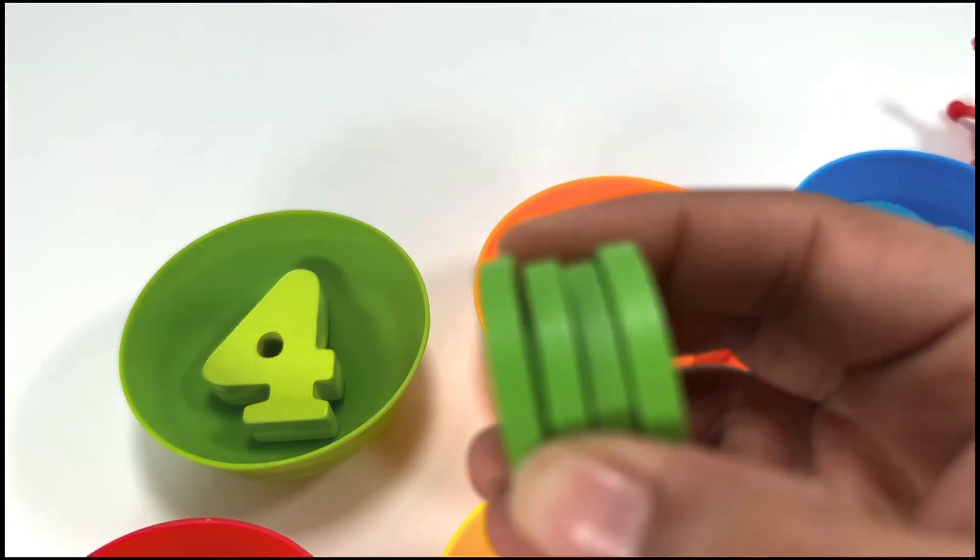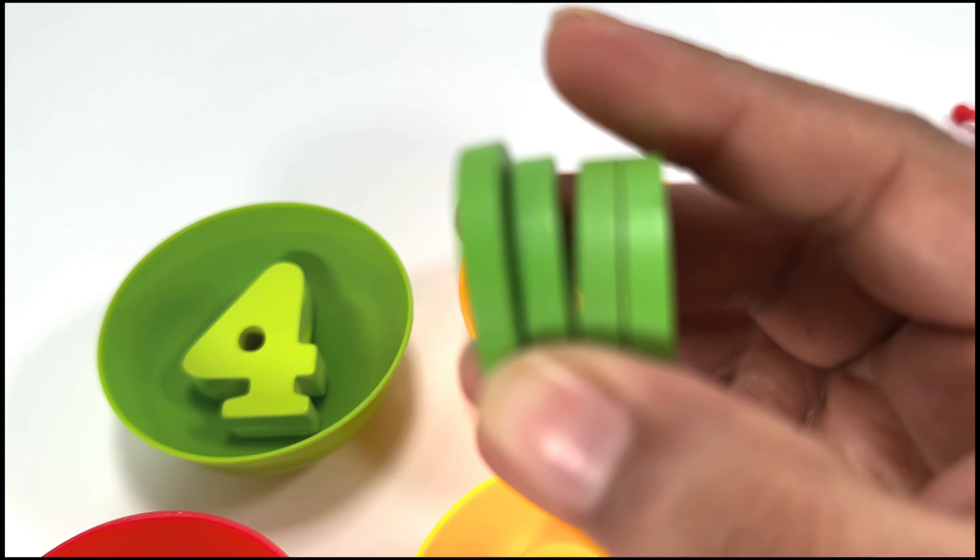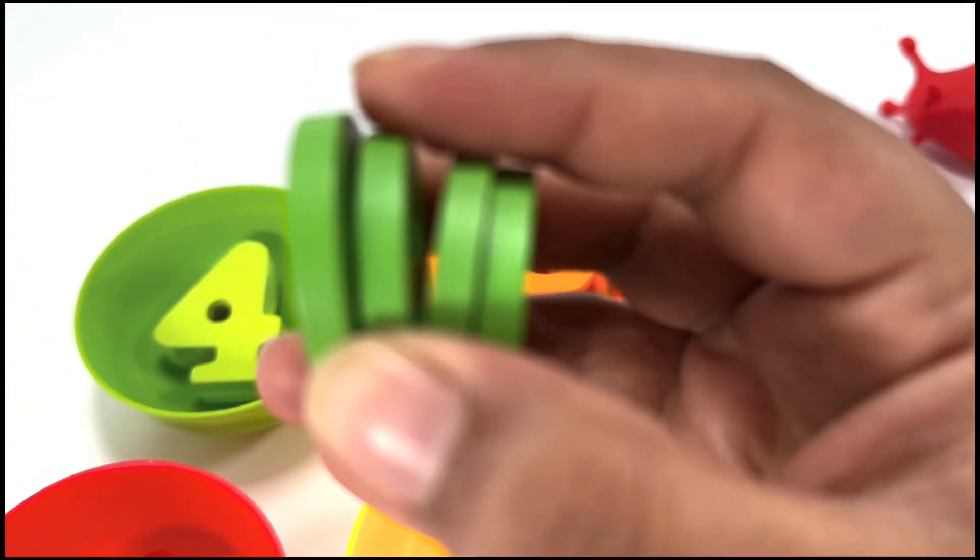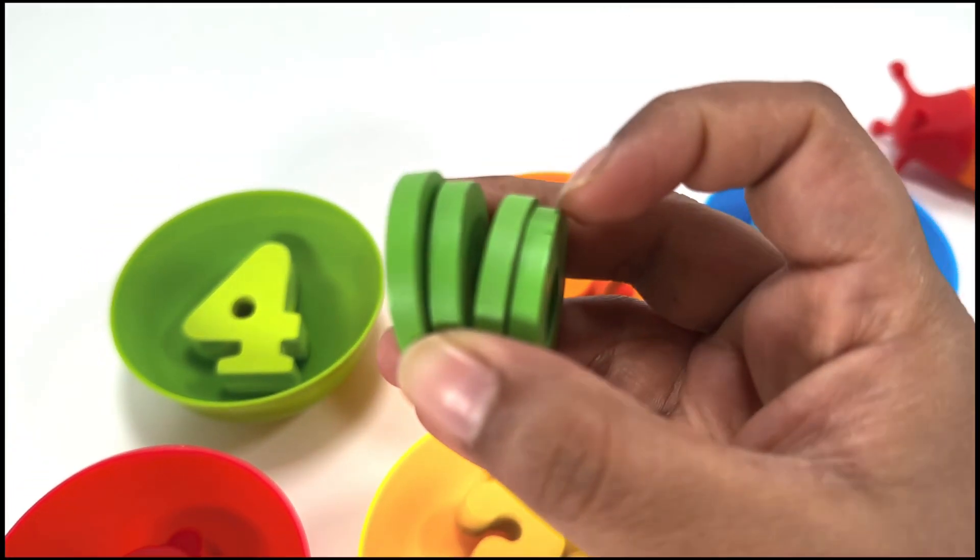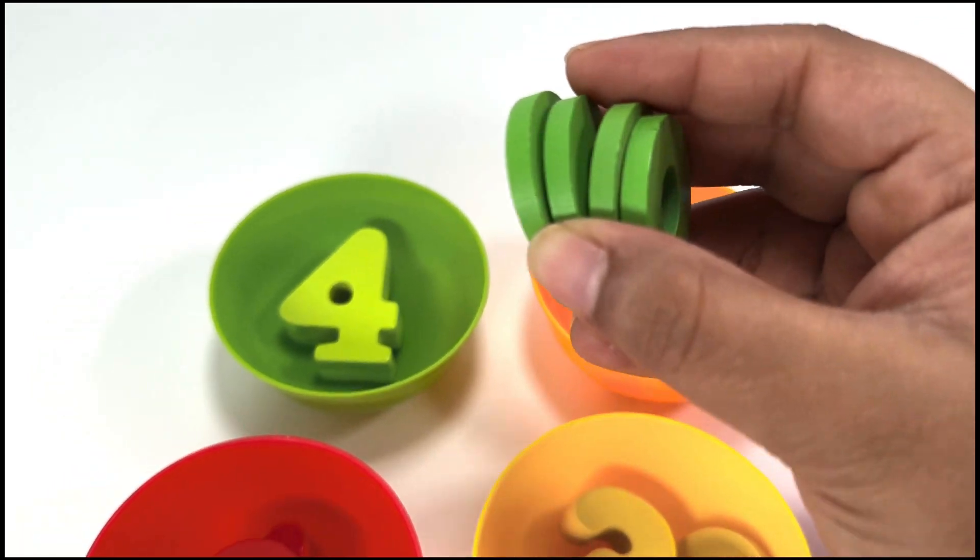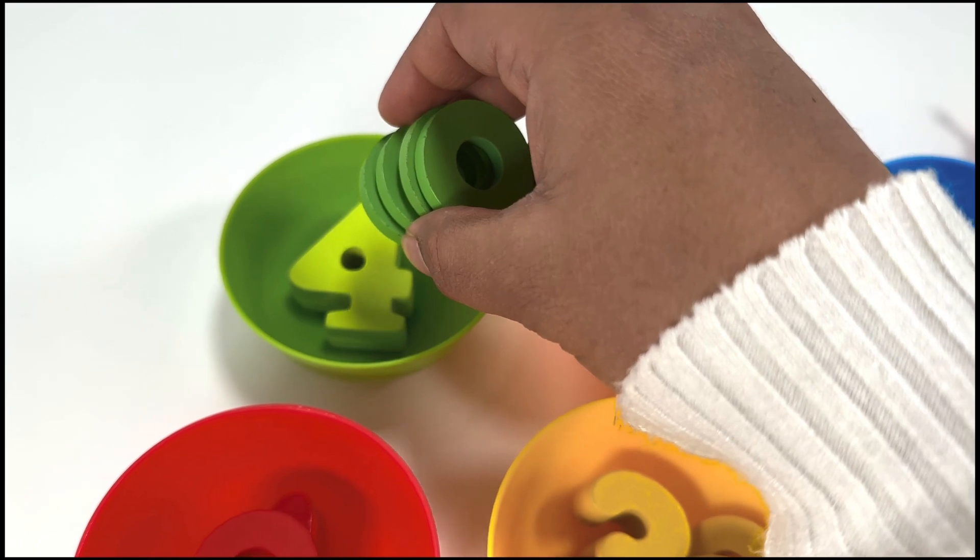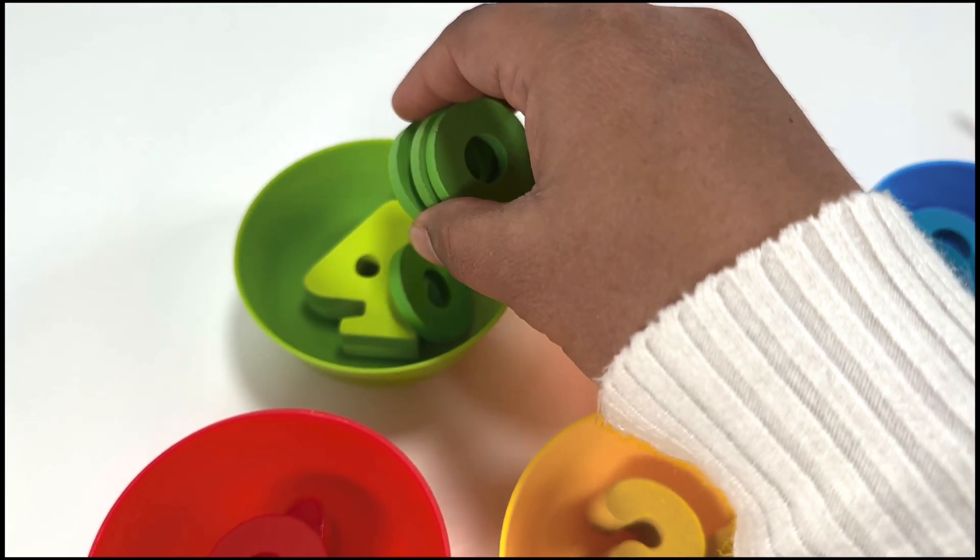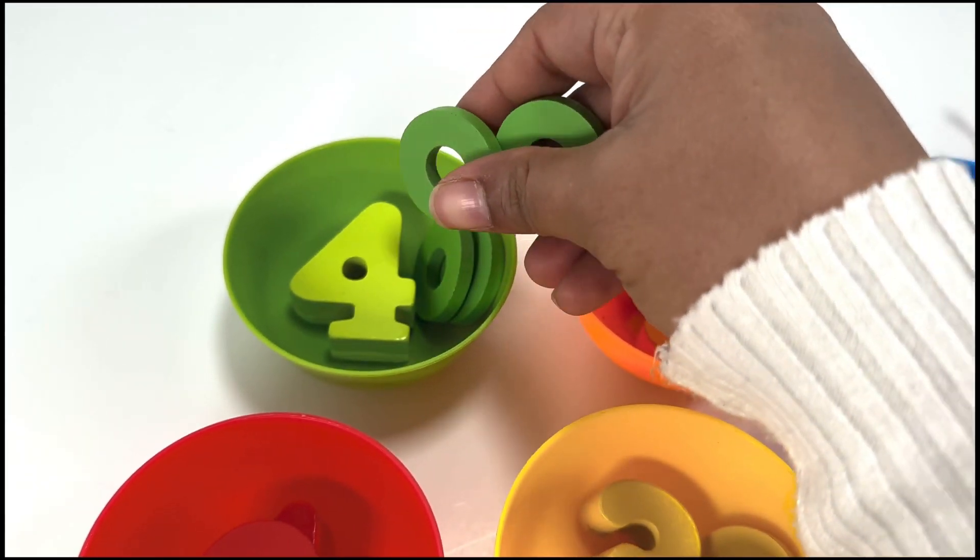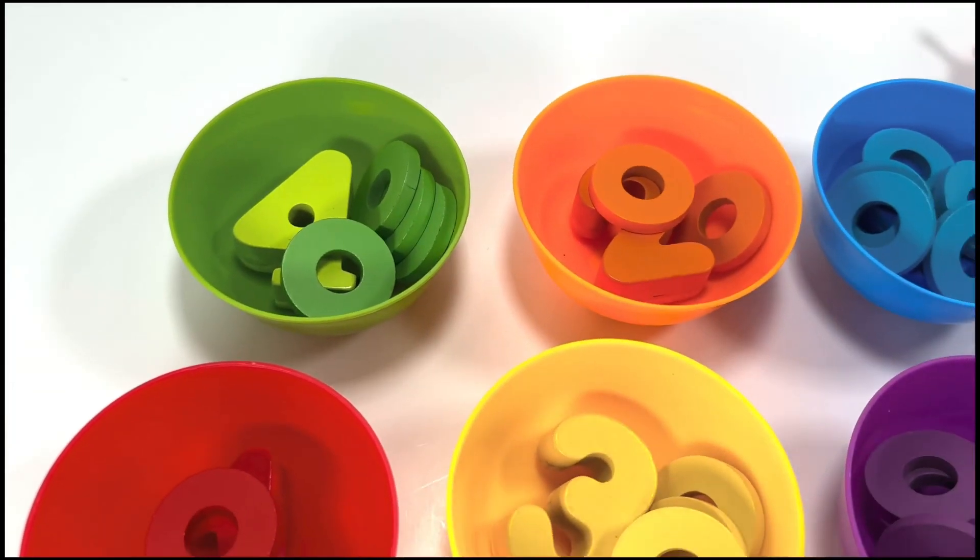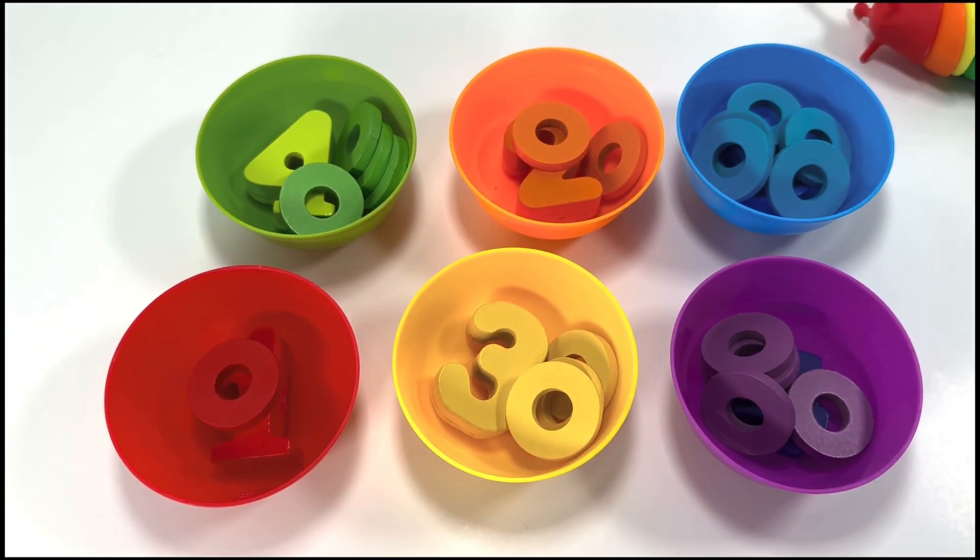How many rings do we have? One, two, three, four. And we also have number four in the green bowl. Let's place it. Let's place the rings right here. One, two, three, four. Amazing. Good job, guys.